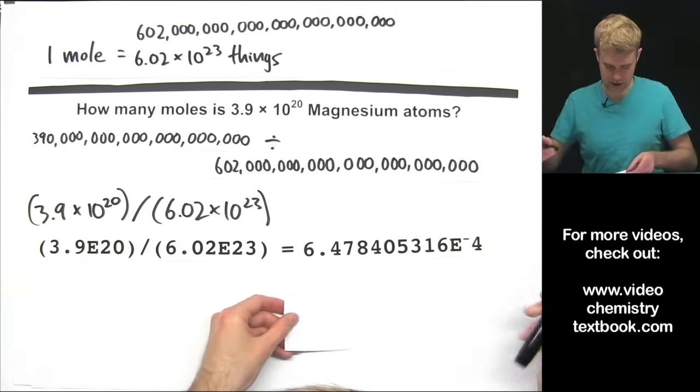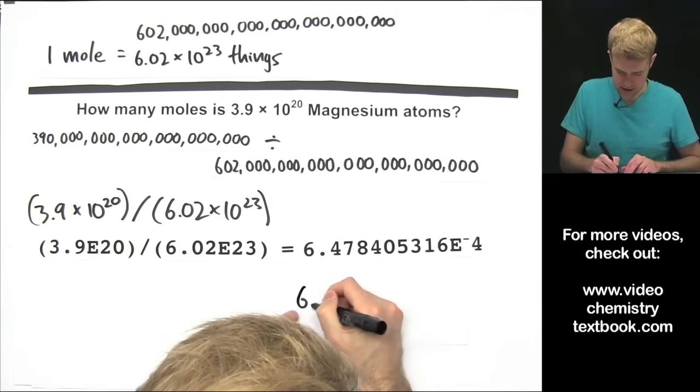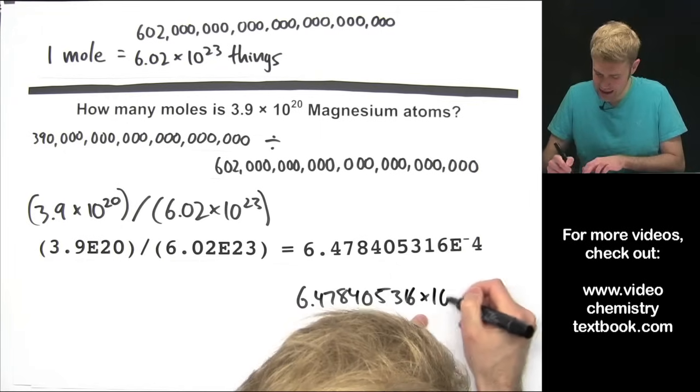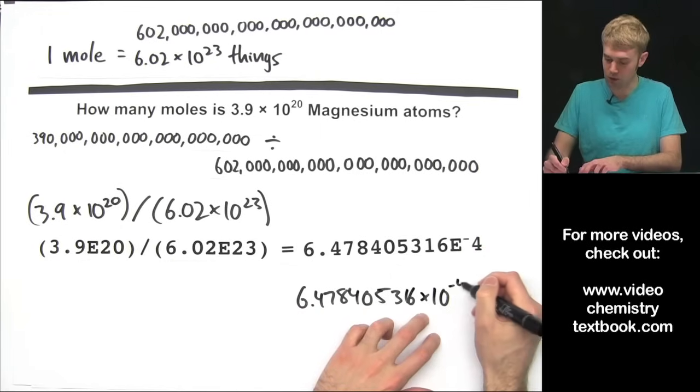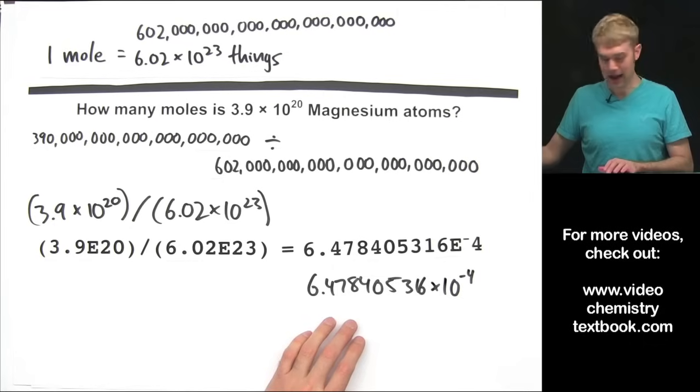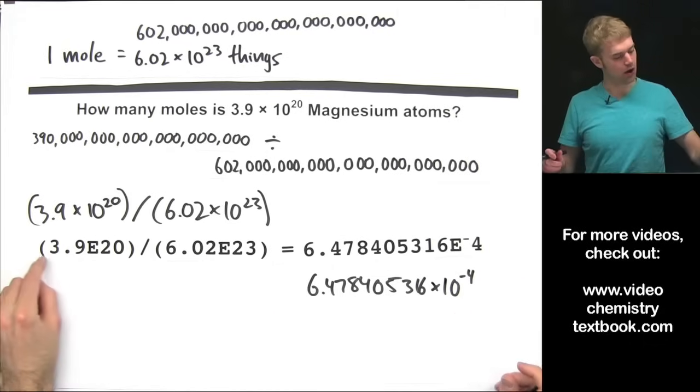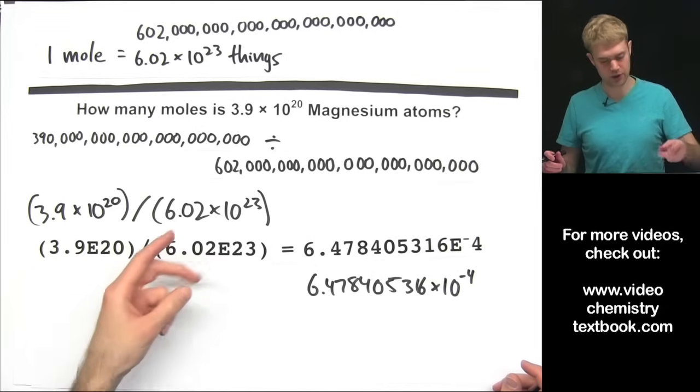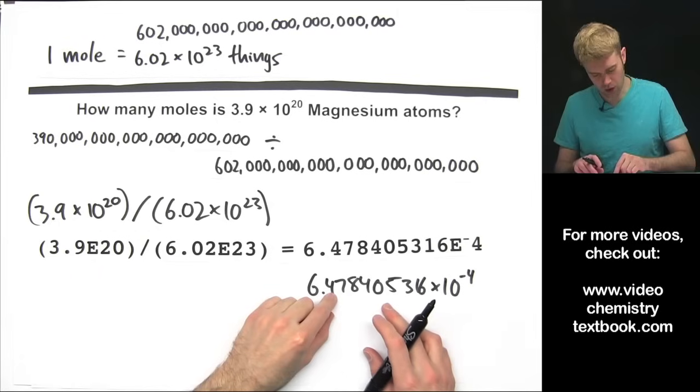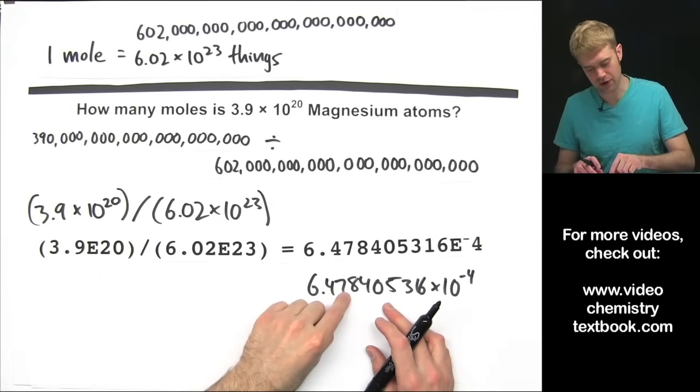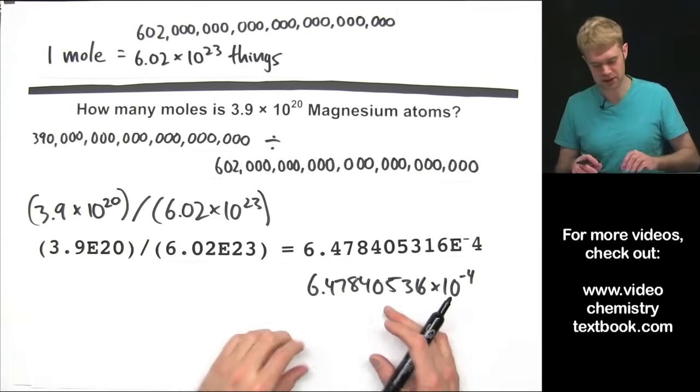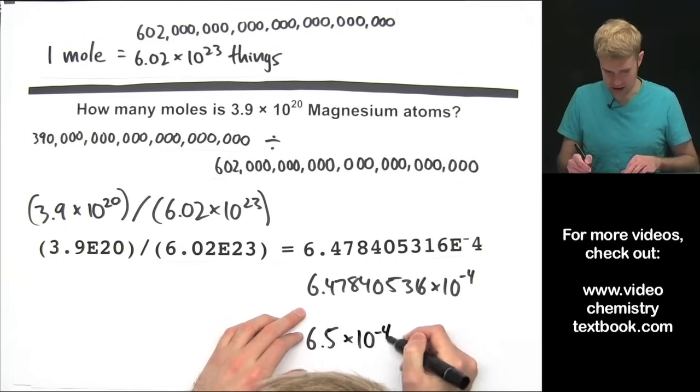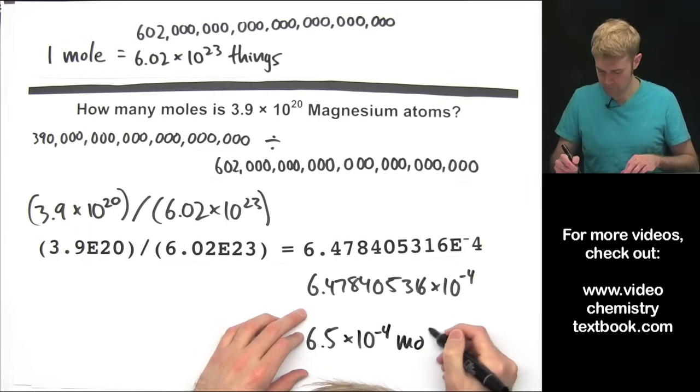Let's put it into scientific notation, 6.478405316 times 10 to the e-4 means 10 to the negative fourth. And now let's use significant figures to round this. There are two sig figs here and three significant figures here, so we're going to round this to two numbers, 6.4, we look next door to the 7, do we round up or keep it the same? We round up because it's a 7, so we're going to do 6.5 times 10 to the negative fourth moles.